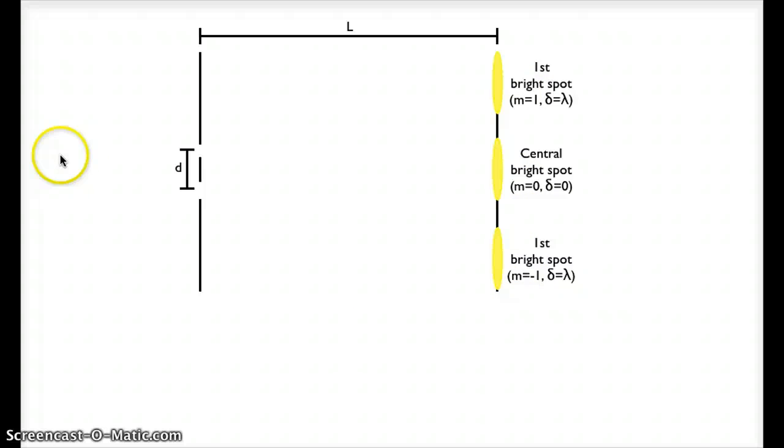So over here on the left somewhere is a light source. This light will pass through these two small slits that are separated by a distance d and some distance l away is our screen where we will see alternating bright spots and dark spots.